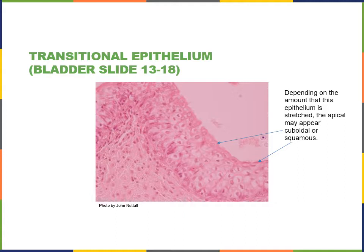A transitional epithelium is one that can stretch to appear either like the apical cells have a round cuboidal shape or a flattened squamous shape. It is found lining the mucous membranes of the urinary tract. This example is from the urinary bladder, where some cells have a round shape and some are flattened. It is a stratified epithelium with multiple layers of cells. Most cells have a cuboidal shape, but the apical surface cells have a variety of shapes depending on whether the epithelium is stretched.